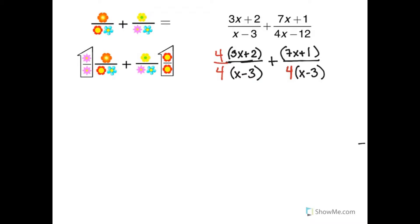Now the two denominators match, and the whole denominator is just 4 times x minus 3.